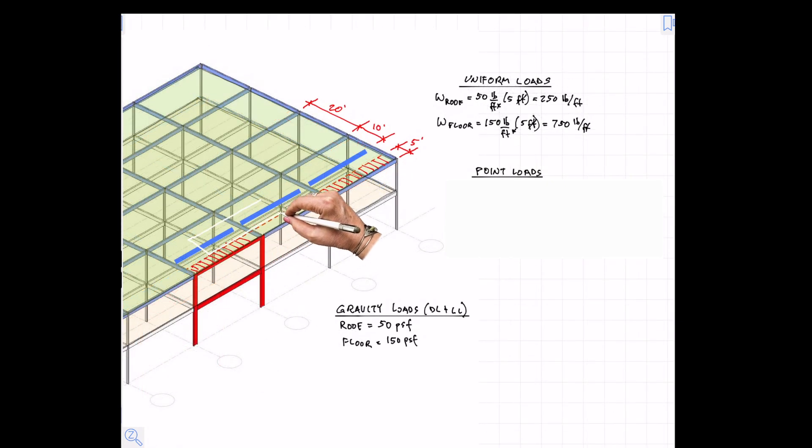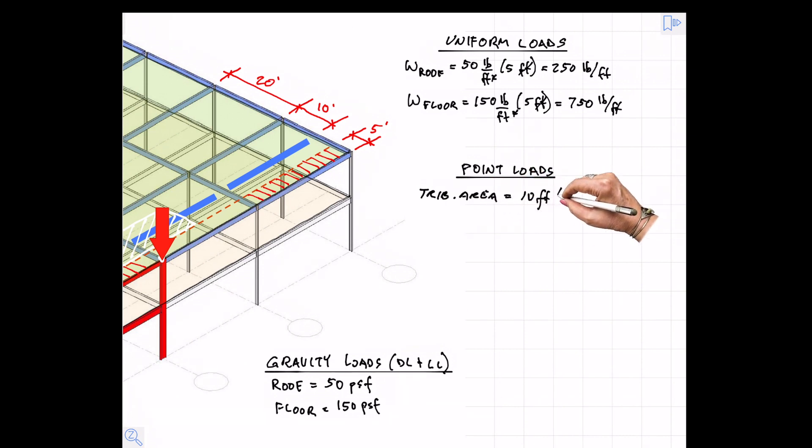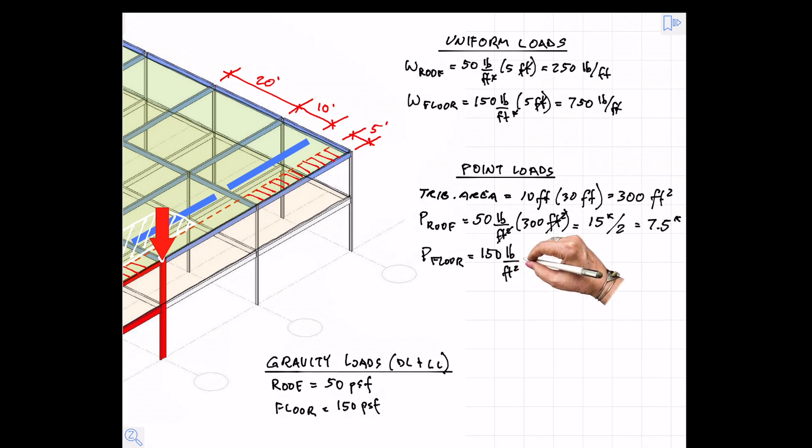We additionally have some concentrated loads on the frame that are due to the tributary area of the blue beams that are shown here that have reactions on either end. So the tributary area that's coming as a concentrated load to that girder that's supported by the frame is 300 square feet on the roof. That gives us a total of 15 kips on the beam or seven and a half kips on either end of that beam.